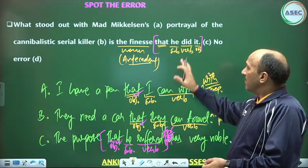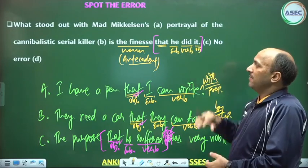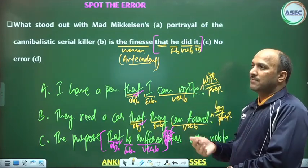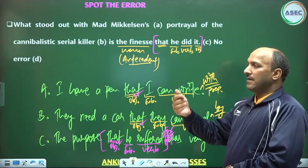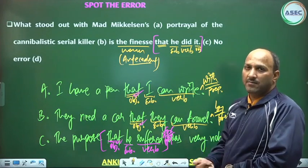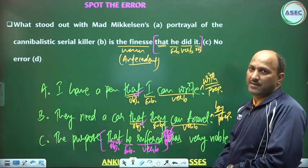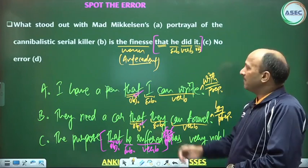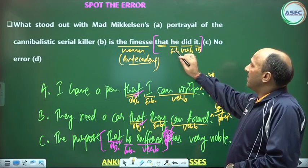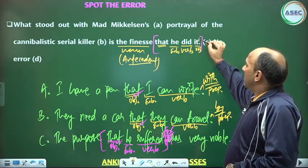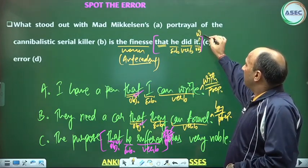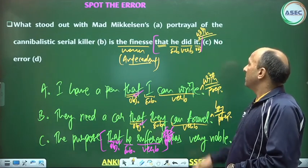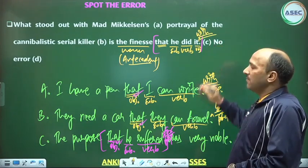This is the manner of the cannibalistic portrayal — the manner that he did portray, how he did portray, with the elegance and style. We use 'manner' to refer to it. We write 'the finesse that he did it with'. That is the answer. The last part — 'with' — shows the error, because 'that' is relative and 'with' is the preposition.